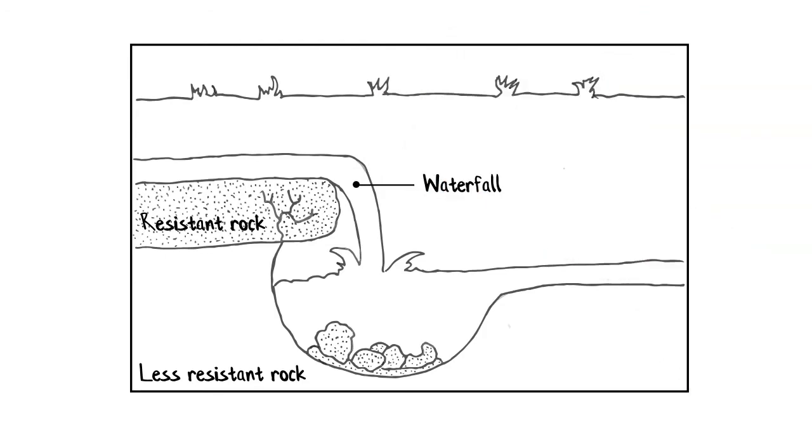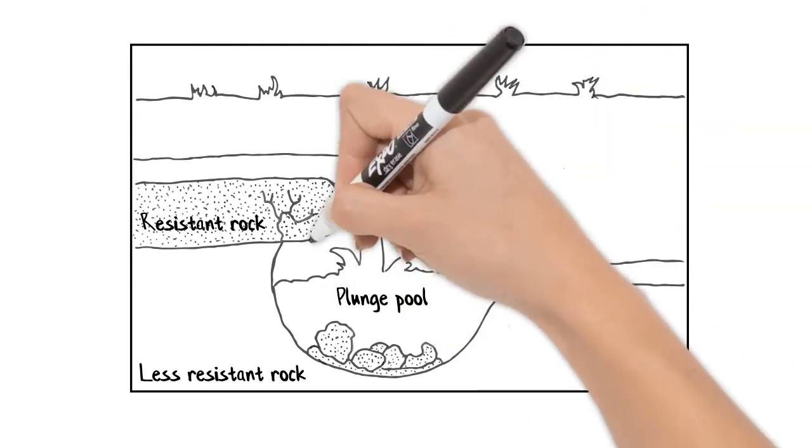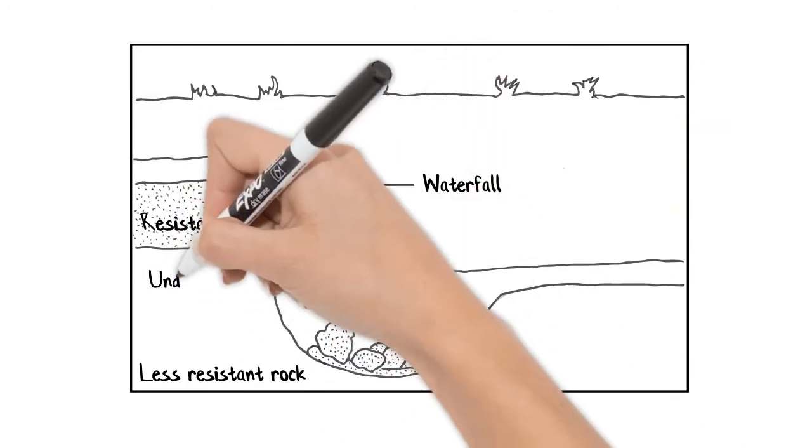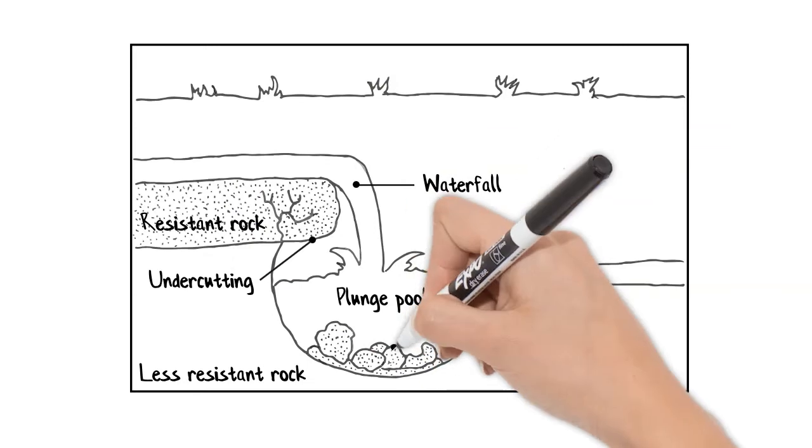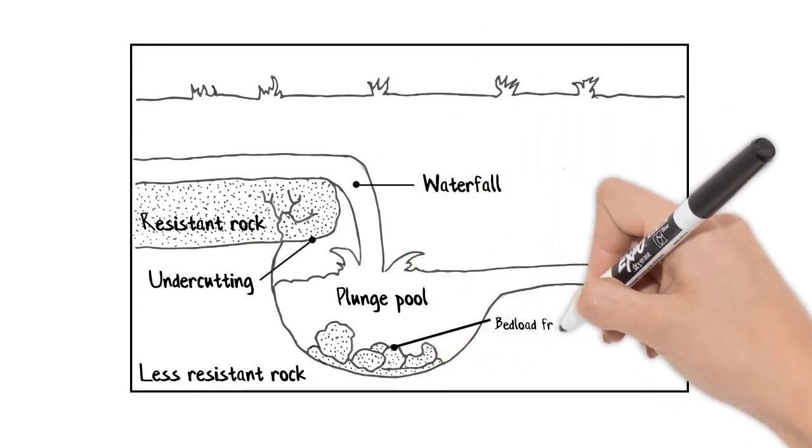And at the base of the waterfall, the deeper plunge pool. It's also good to identify where the undercutting is taking place through hydraulic action. Now we can label some of the resistant rock that's fallen into the plunge pool.